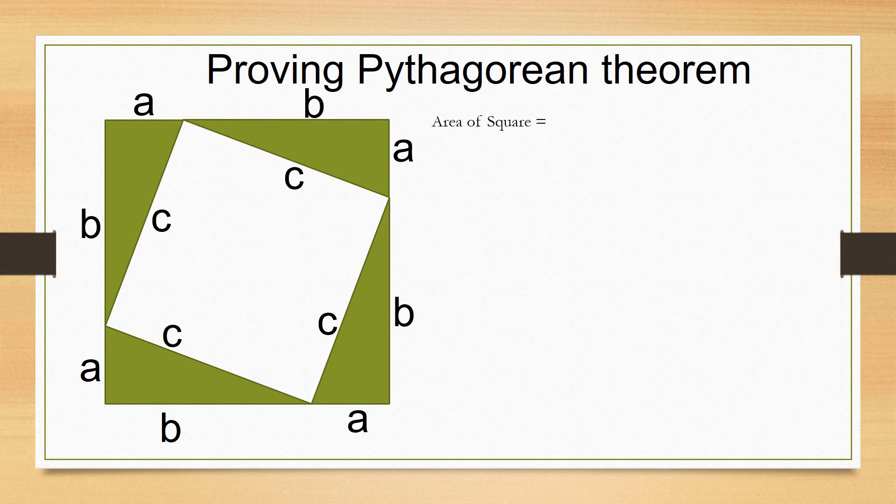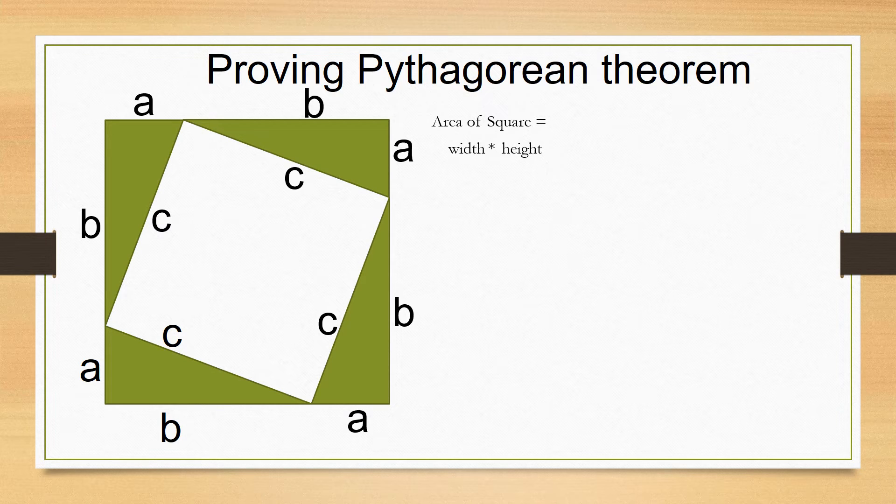What is the area of this square? The area of a square is its width times its height, so a plus b times a plus b. Correct.